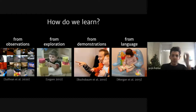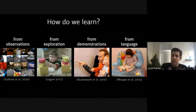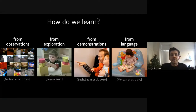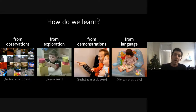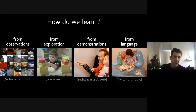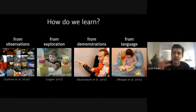He starts with a big question: how do people learn? A distinguishing feature of human cognition is the ease with which we learn new skills and concepts. We learn by observing before we can act, then from interaction and trial and error, then from explicit labeling and demonstration from teachers.